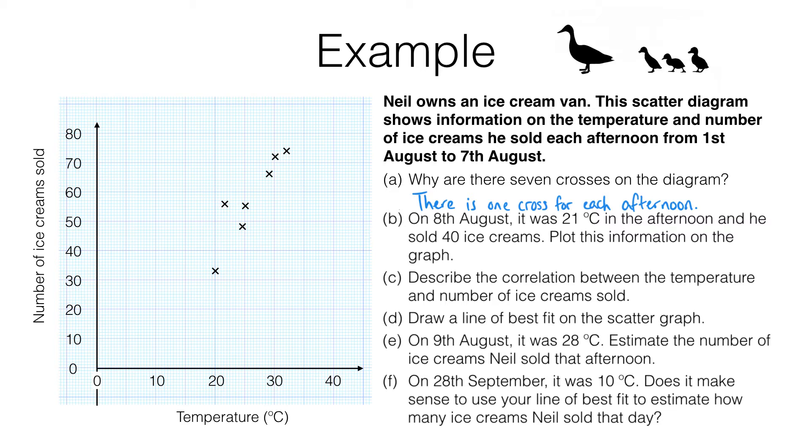In part B, we're told that it was 21 degrees and that Neil sold 40 ice creams. We need to plot this on the graph, so I will read along to 21 on the temperature axis and up to 40 here and plot the point with a cross.